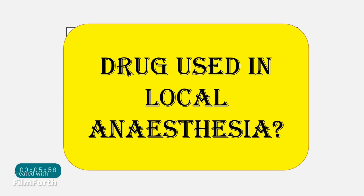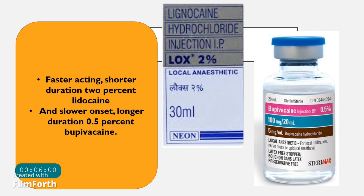The drugs used in local anesthesia for peribulbar, retrobulbar, and Tenon's procedures are two important agents. The first is lignocaine hydrochloride 2%, which comes in a vial of about 30 ml — it is faster acting and shorter duration. The second is bupivacaine, which is slightly longer acting and comes in a 20 ml vial at a concentration of 0.5%.